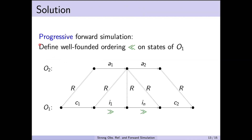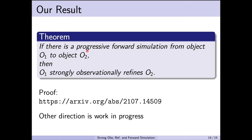In our paper, we provide a solution by defining a new notion of forward simulation called progressive forward simulation. The idea is that not only do we have a refinement relation between the abstract and concrete objects, but we also have a well-founded ordering that is guaranteed to be reduced by the execution of O1 whenever O1 stutters. This notion of progressive forward simulation will never allow infinite stuttering because the well-founded ordering guarantees that any stuttering in the concrete system eventually terminates. We prove a sufficiency theorem: if there is a progressive forward simulation from O1 to O2, then O1 strongly observationally refines O2.